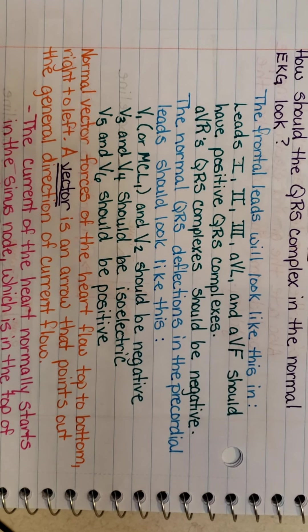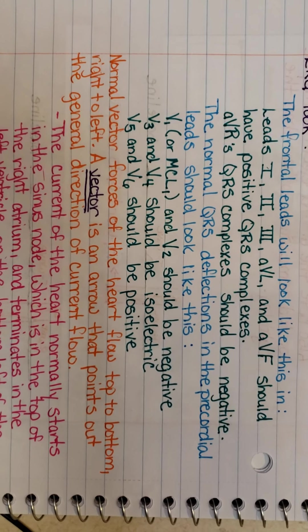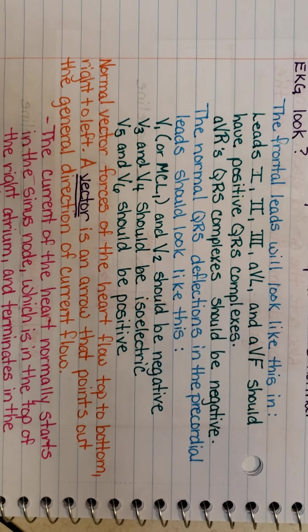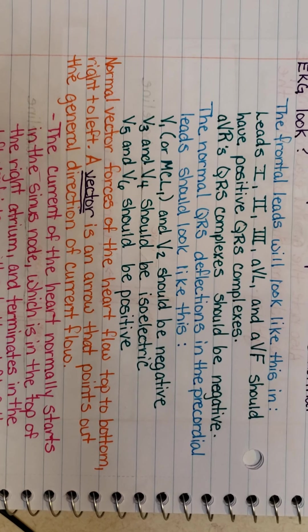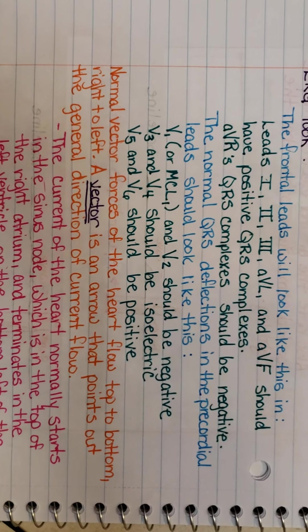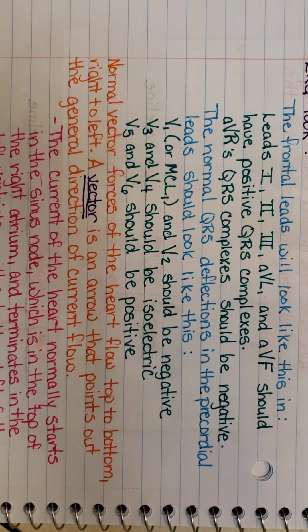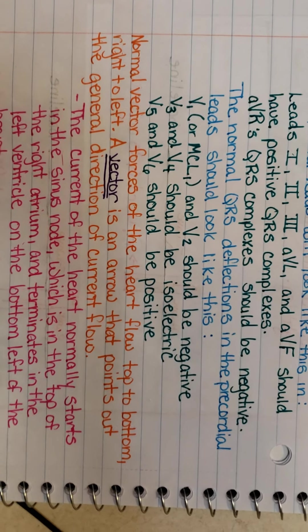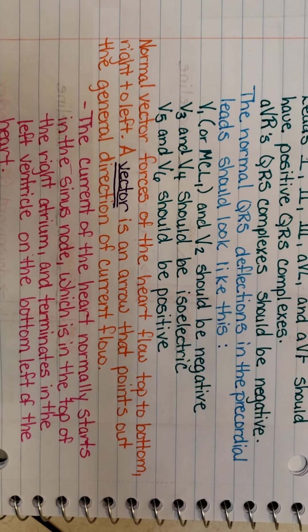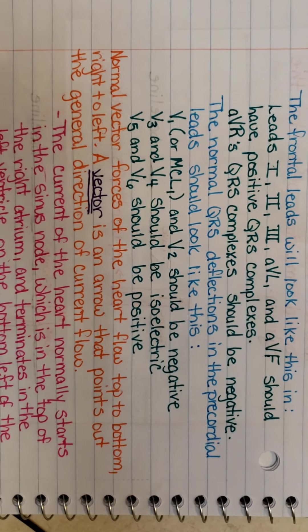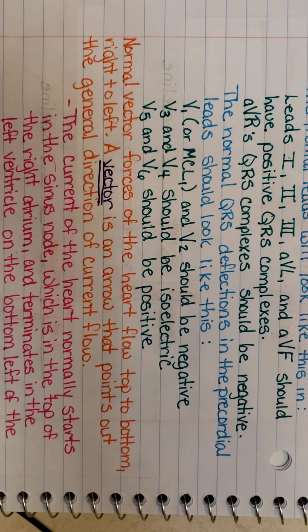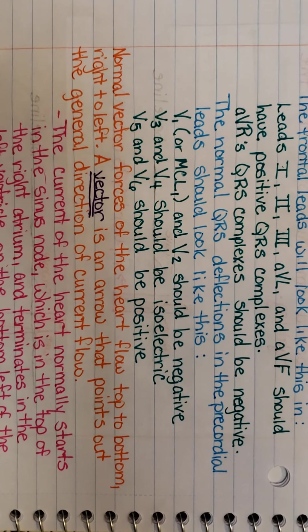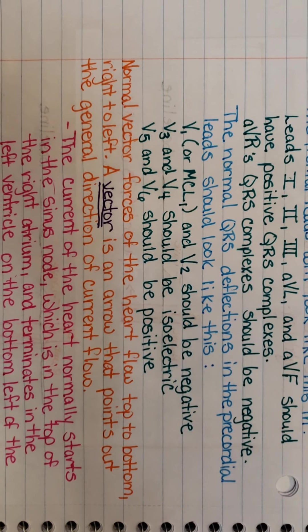The normal QRS deflection in the precordial leads should look like simply as this. V1 or MCL1, because remember V1 is the same as MCL1, and V2 should be negative first. V3, V4 should be isoelectric, meaning neither negative or positive off the baseline. V5, V6 should be positive, meaning your R waves should be going in the upward direction. Because when you get to V5 and V6, they are more to the left side, which is your strong side of your heart, and it should be going toward the heart's positive current.